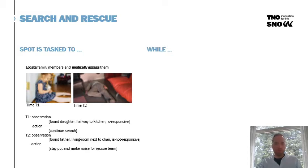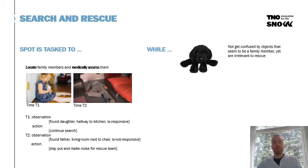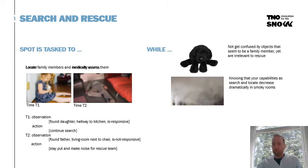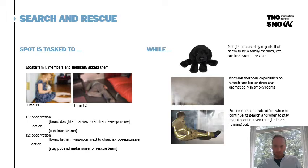Spot should be aware of several aspects. First, not all objects in a villa are to be rescued — sometimes an object might seem relevant to rescue, for example a pet dog, which is of course not the real one. Also, if there is smoke in a particular room, Spot should recognize it is not capable of searching and rescuing in a smoky room. Third, he should also be aware that he must make a trade-off on when to continue with search or when to stay and assist the victim.